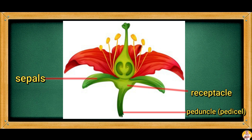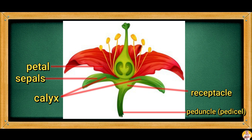Sepals enclose and protect the upper parts of the flower, especially when the flower is still a bud. Sepals are considered modified leaves, which means they have a special function. A flower always has a collection of sepals called the calyx.